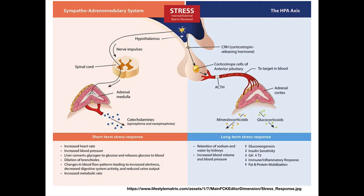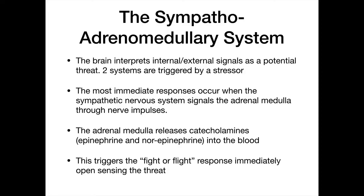There's also an increase in fat and protein metabolism. Mineralocorticoids, while less dramatic, cause the kidneys to retain sodium and water, increasing blood volume and blood pressure. That covers a lot of the major effects of both arms of the stress response system.